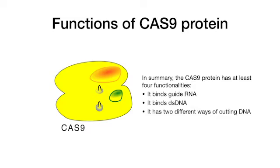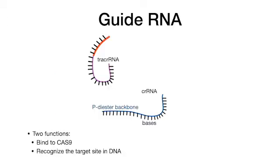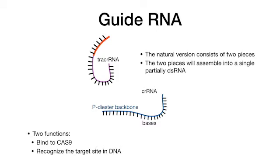In summary, the Cas9 protein has four functions: it binds guide RNA, it binds DNA, and it has two different ways of cutting DNA. The guide RNA also has two functions: to bind Cas9 and to recognize the target site in DNA.